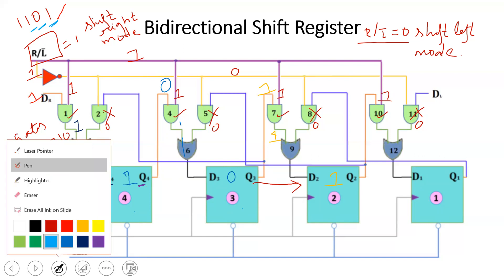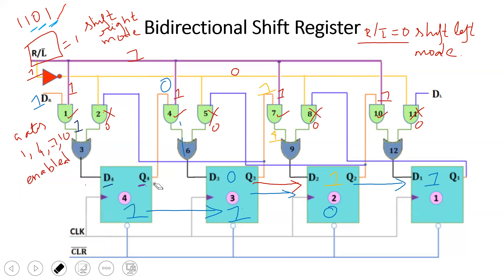At the fourth clock pulse, the MSB data is 1. Simultaneously, Q2 gets 1 shifted in, Q3 gets 0 shifted in, Q4 gets 1 shifted in. Through the combination circuit, data is shifted. Finally, MSB equals 1 is loaded. Input data 1, 0, 1, 1 (LSB to MSB) is fully loaded. With each subsequent clock pulse, Q1 outputs the data serially. This is how the shift-right mode works.